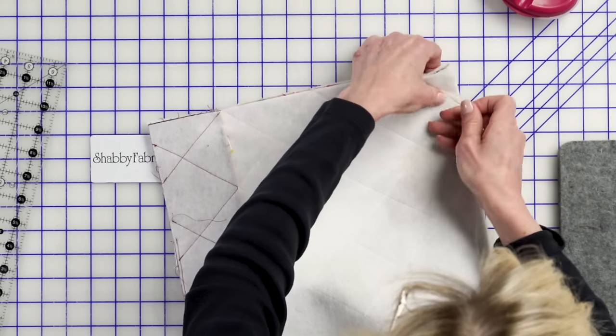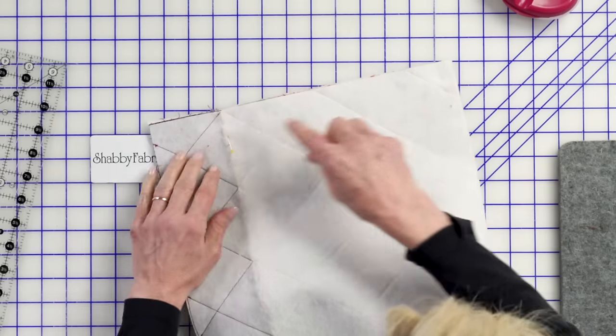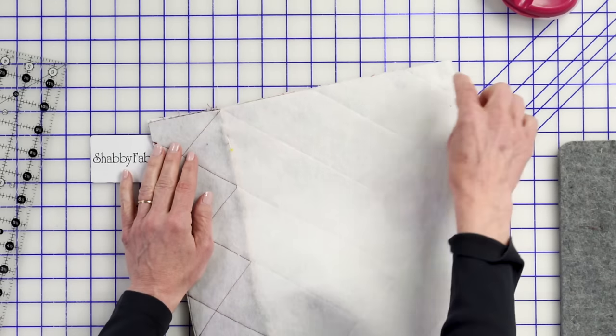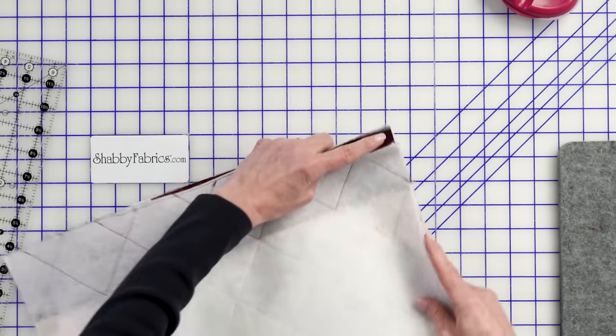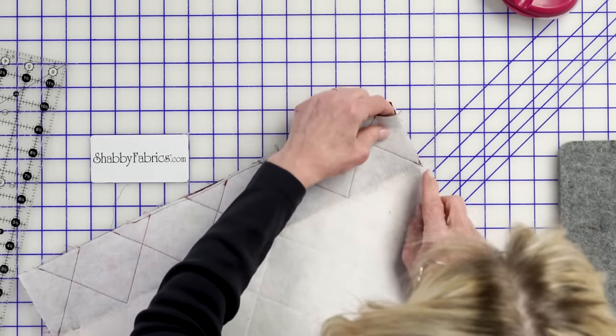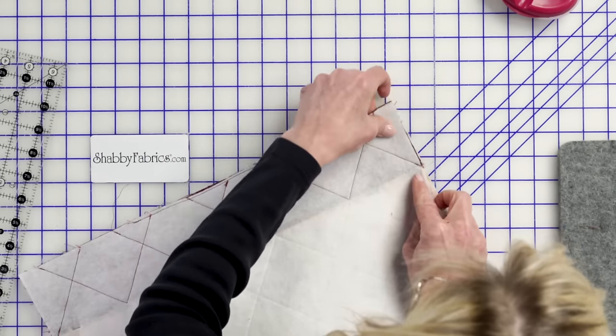Go ahead and pin there first, and all the way down. Now, we'll go ahead, I'm going to sew a quarter of an inch all the way down on both sides. And then we're going to move on to something called boxing the corners.